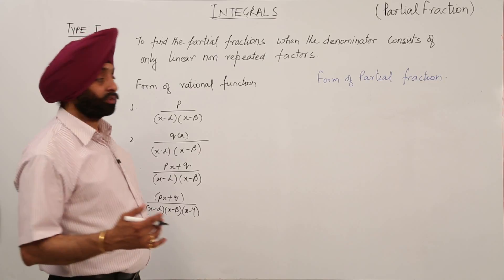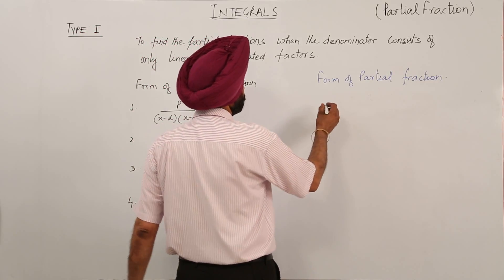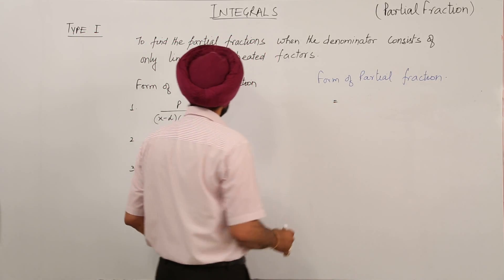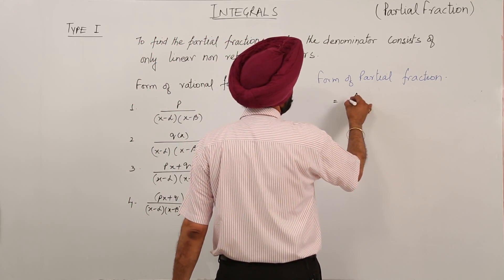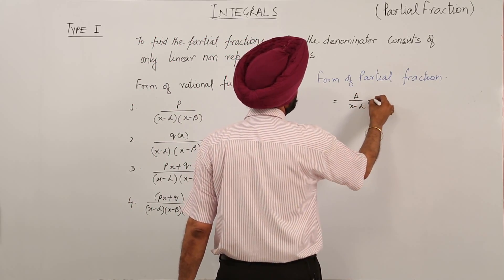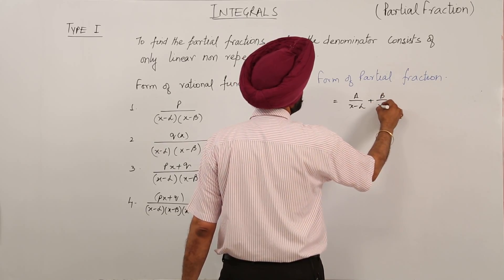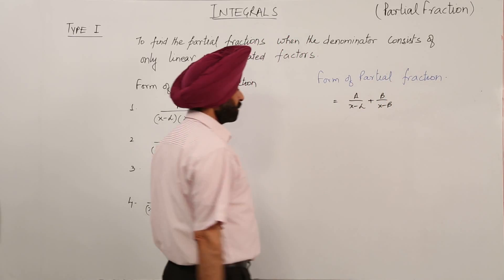Now what are the forms of the partial fraction? Now this can be written as this part. How we are writing it? A upon x minus alpha plus B upon x minus beta. And then we are solving it.